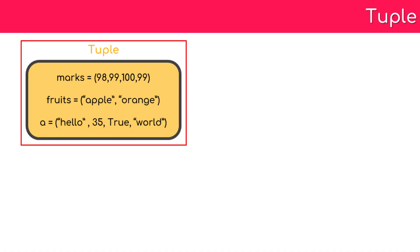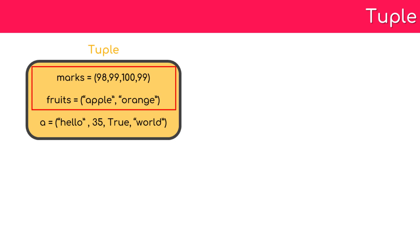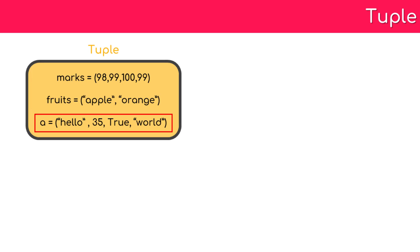The first type we are going to see in this lesson is the tuple. A tuple is nothing but an array of items enclosed within round brackets. Tuples are similar to lists where you can add items of the same type, as displayed in variables like marks or fruits, or you can have a tuple with different item types, as in the variable a.